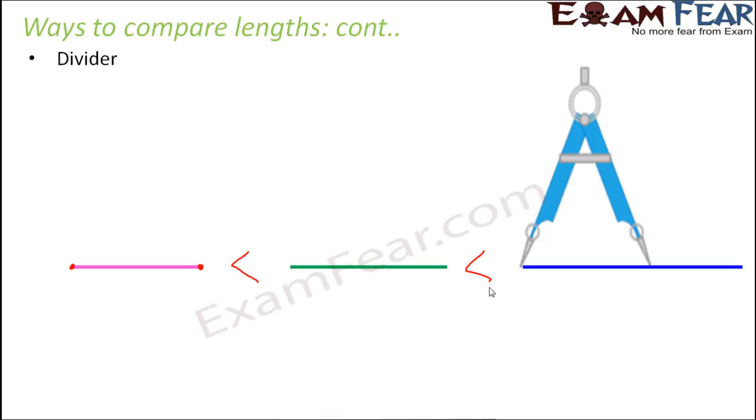So in that case what you need to do is first you take the length of the line segment in the opening of the divider, which you have already done. Like you place the two ends of the divider on the two ends of the line segment. That means the opening of your divider now tells you the length of the line segment. Now you take a ruler, place it, and place the divider above that ruler in such a way that one end of the divider coincides with the zero of the scale.